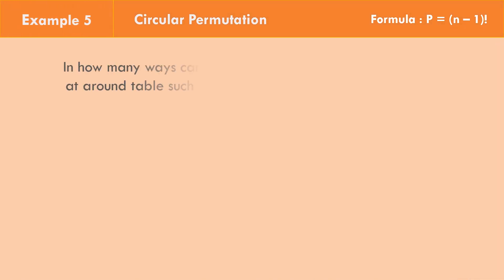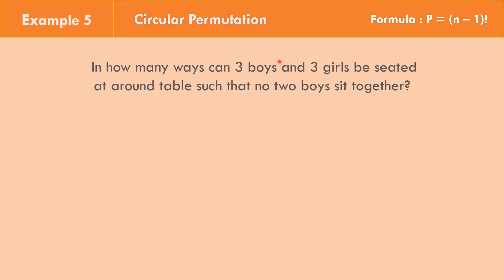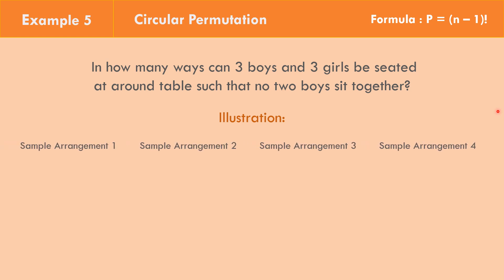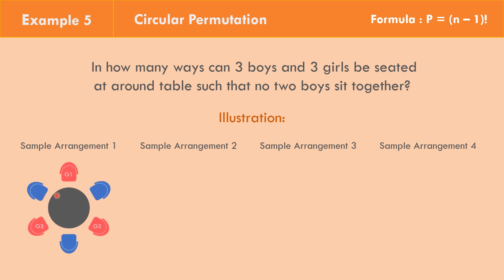In example number 5, in how many ways can 3 boys and 3 girls be seated at a round table such that no 2 boys sit together? This means the boys and girls must alternate seats. Let us look at the sample arrangements for this given problem.